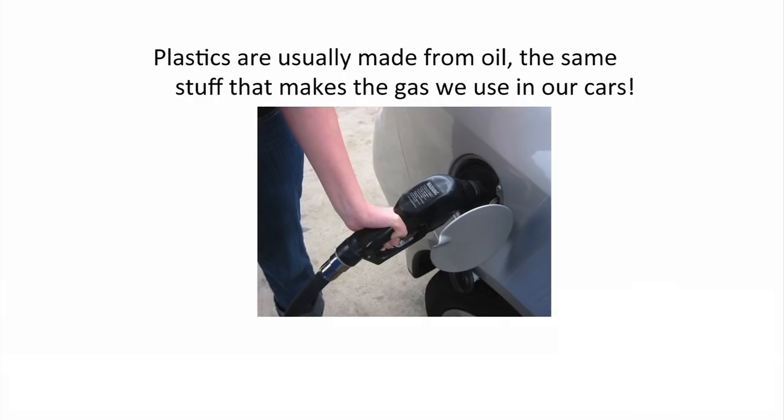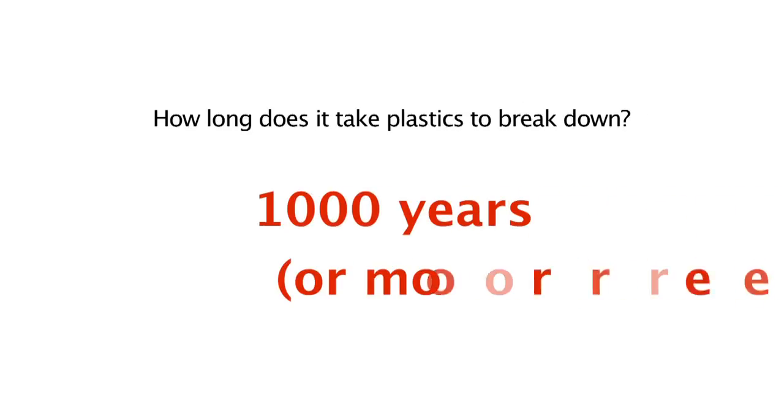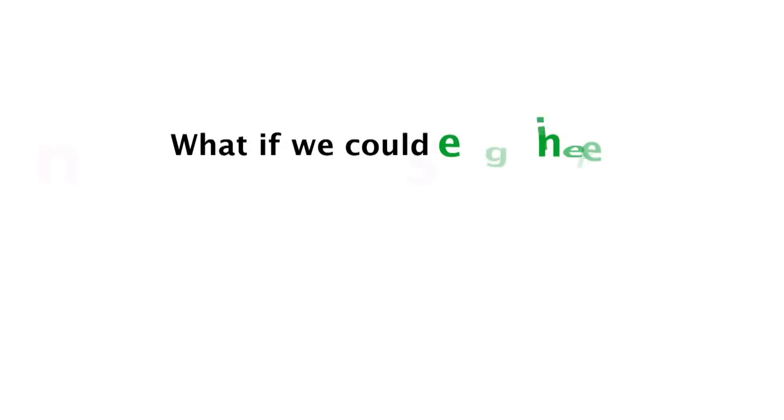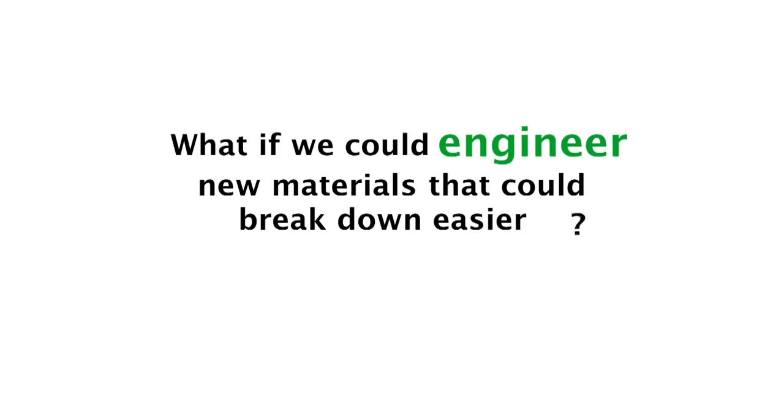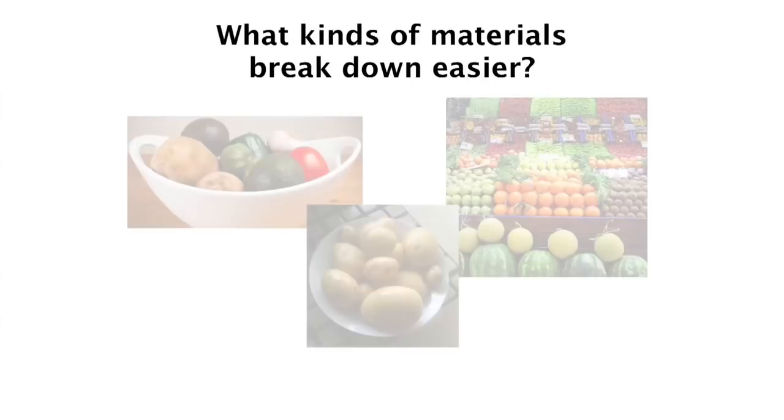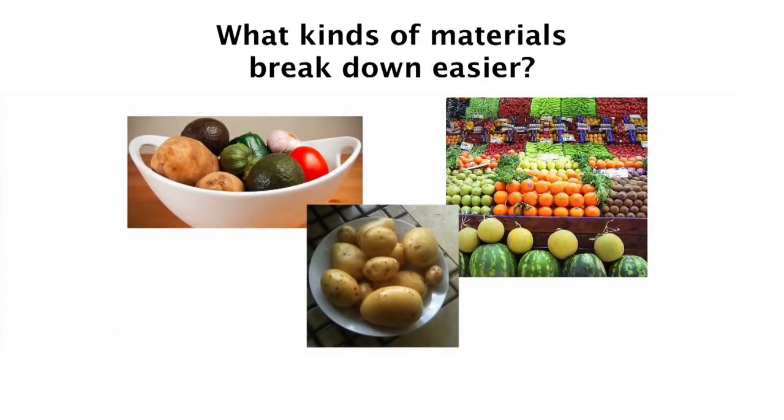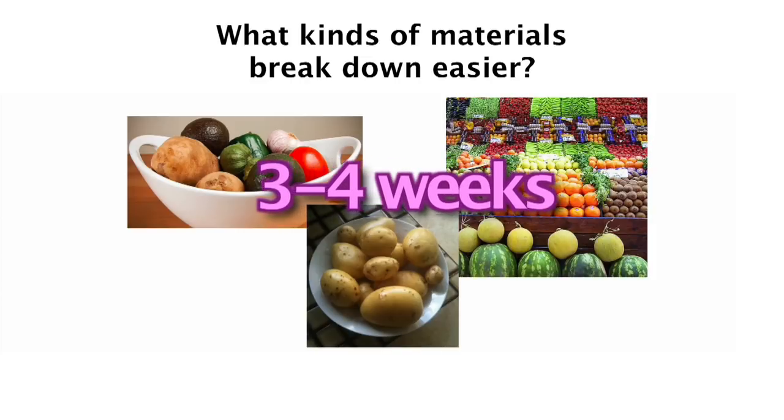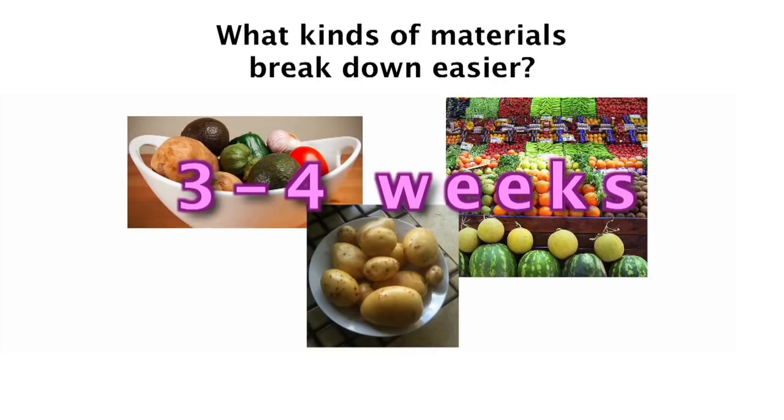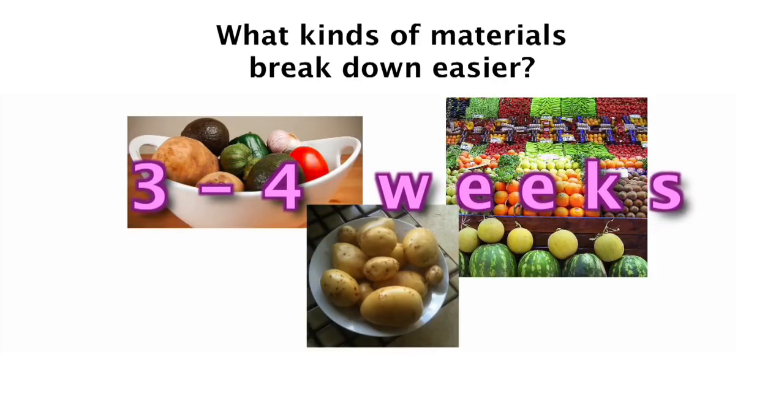Plastic polymers are usually made from oil, which is the same stuff that makes the gas we use in our cars. How long does it take all of this plastic we use to break down? It takes a thousand years or more for plastic to break down when we throw it away. What if we could engineer new materials that could break down easier? Fruits and vegetables break down very easily when they're left out over time. In fact they only take three to four weeks to break down when they're thrown away. What if we could make plastic out of fruits and vegetables?